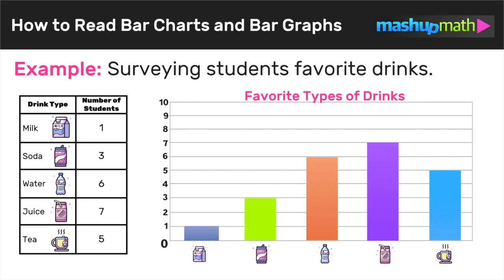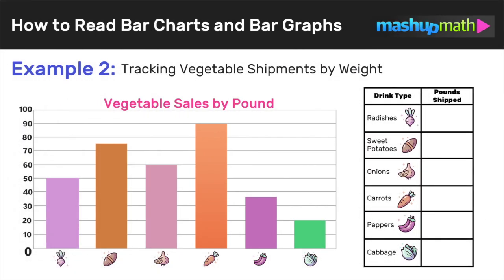Let's look at one more example. In this second example, we're given a bar graph — again, bar graph and bar chart mean the same thing — and we want to read it correctly to fill in a data chart. This bar graph represents vegetable sales by pound. Let's note that the vertical axis goes from zero to one hundred, so these are much larger numbers than in the first example, which only went from zero to ten.